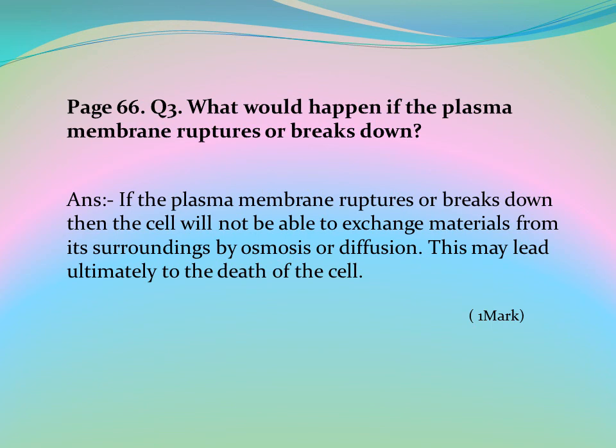Page 66, Question 3: What would happen if the plasma membrane ruptures or breaks down? If the plasma membrane ruptures or breaks down, the cell will not be able to exchange materials from its surroundings by osmosis or diffusion, which may ultimately lead to the death of the cell.